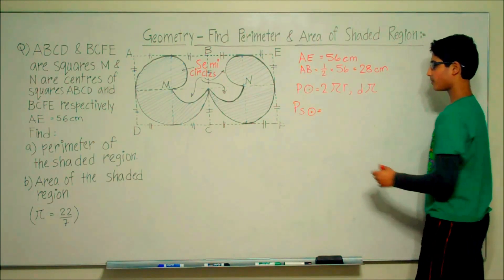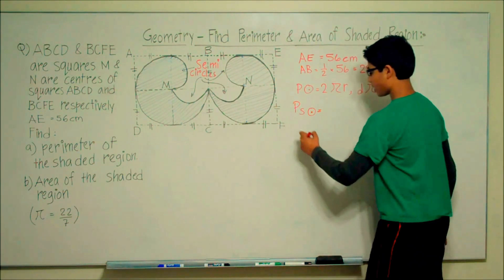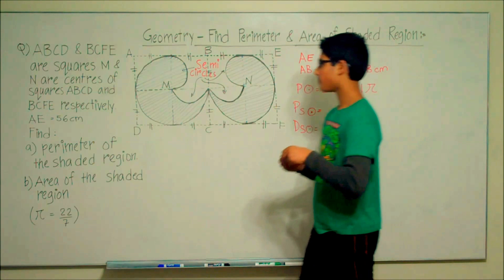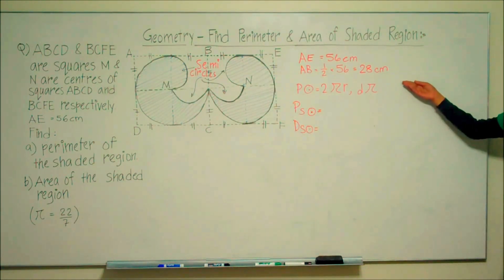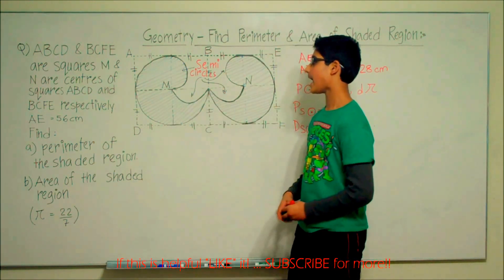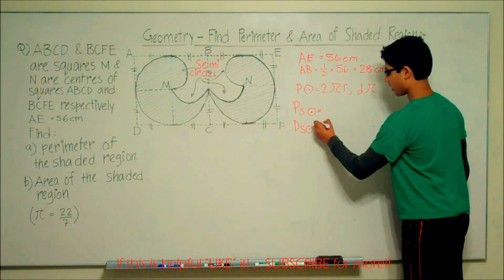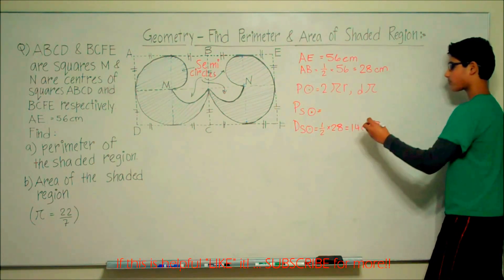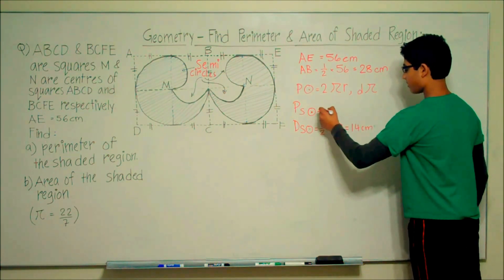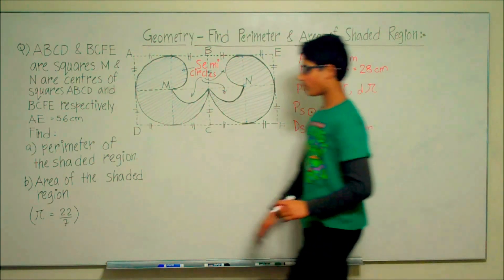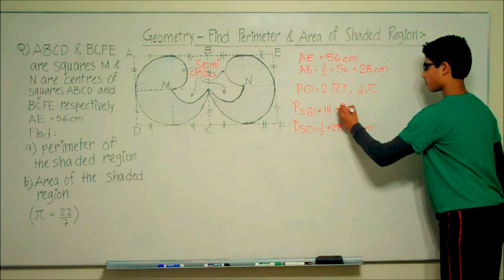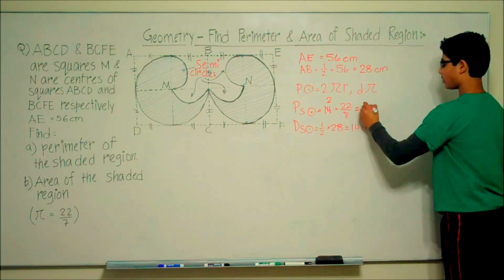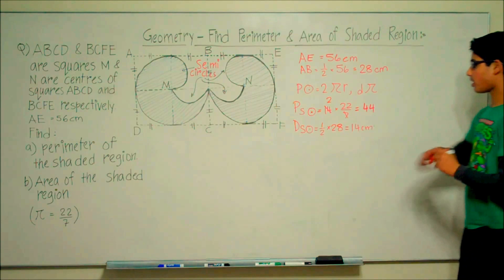Let's find the diameter of the small circle. We know that AB is equal to 28 centimeters, and the diameter of the small circle is half of line AB. So the diameter is half of 28 centimeters, which equals 14 centimeters. The perimeter equals diameter times pi: 14 times 22 over 7. Seven goes into 14 two times, giving 2 times 22, which equals 44 centimeters.